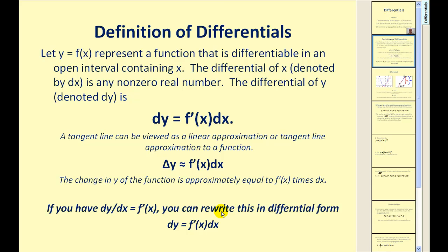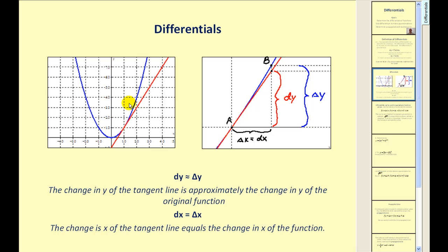Let's take a look at what's happening when we use differentials graphically. Here we see a function in blue and a tangent line in red. Taking a closer look at the point of tangency, if we let the change of x, delta x, equal dx — meaning the change of x is the same for the function and the tangent line — we should notice that delta y, the change of y of the function, is approximately equal to differential y, the change in y on the tangent line. Differential y is approximately delta y, and dx is equal to delta x.